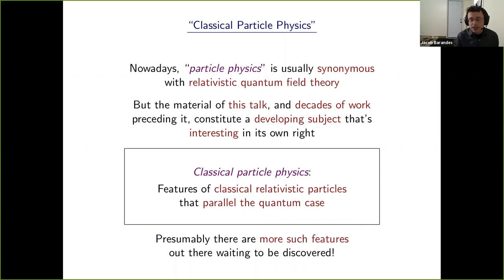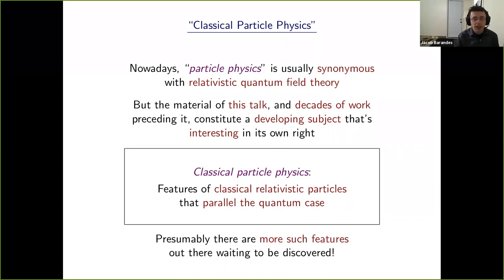When people say particle physics nowadays, usually they mean relativistic quantum field theory. What I'd like to emphasize is there's a whole field of classical particle physics that really is about classical particles. One way to think about this is it's the set of features that already show up at the level of classical point particles that nicely parallel things one sees in the quantum case — and presumably there are more such features not included in this talk.